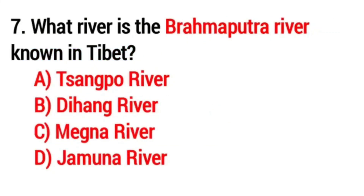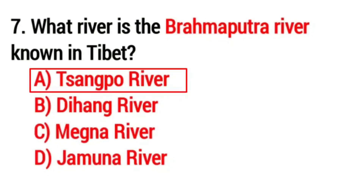Question No. 7. What is the Brahmaputra river known as in Tibet? Answer Option A: Sangpo river.